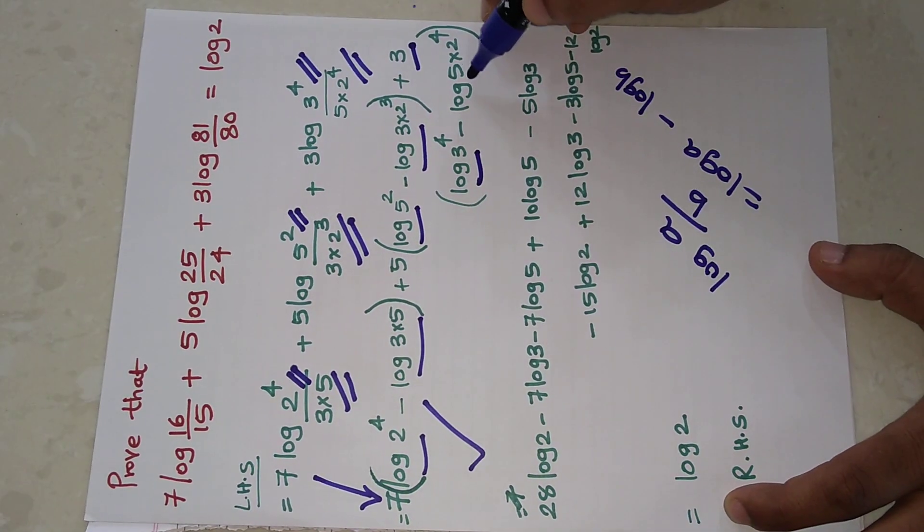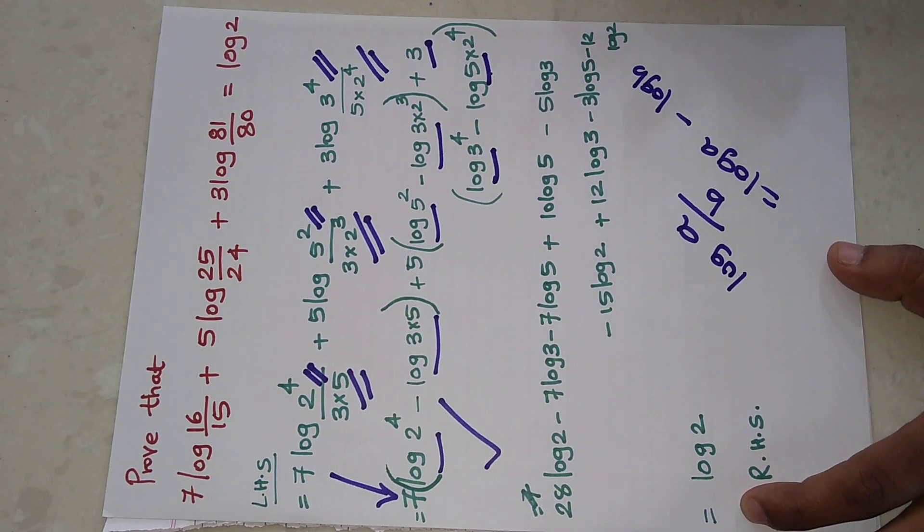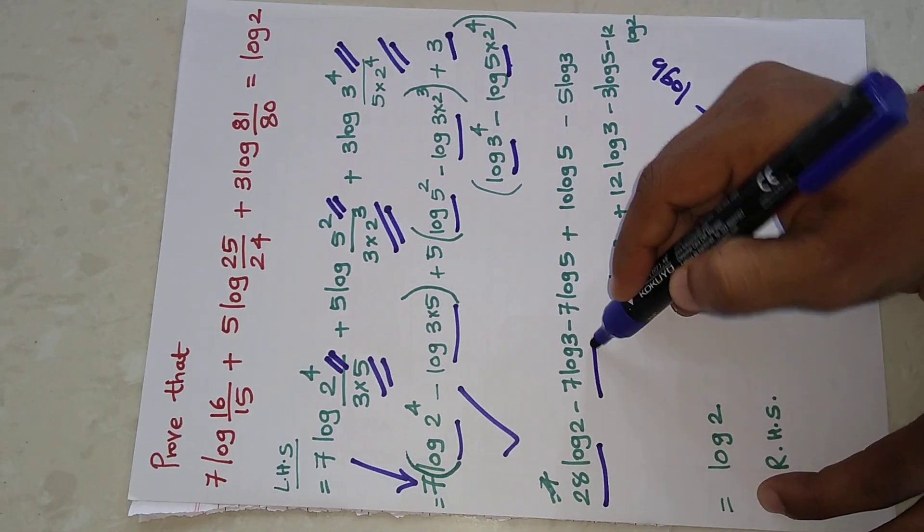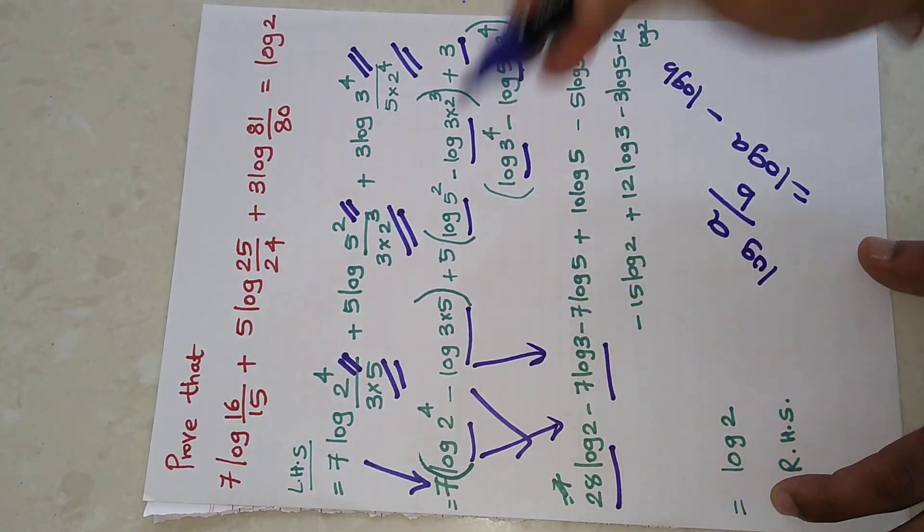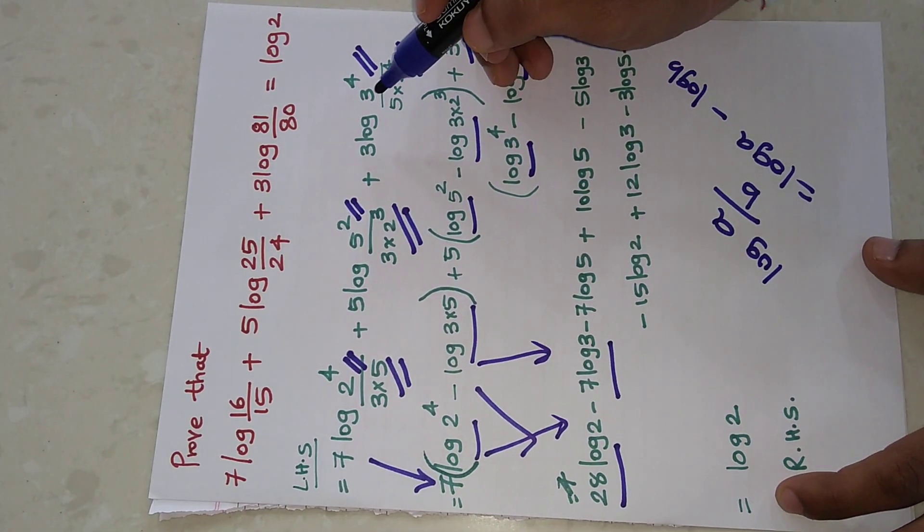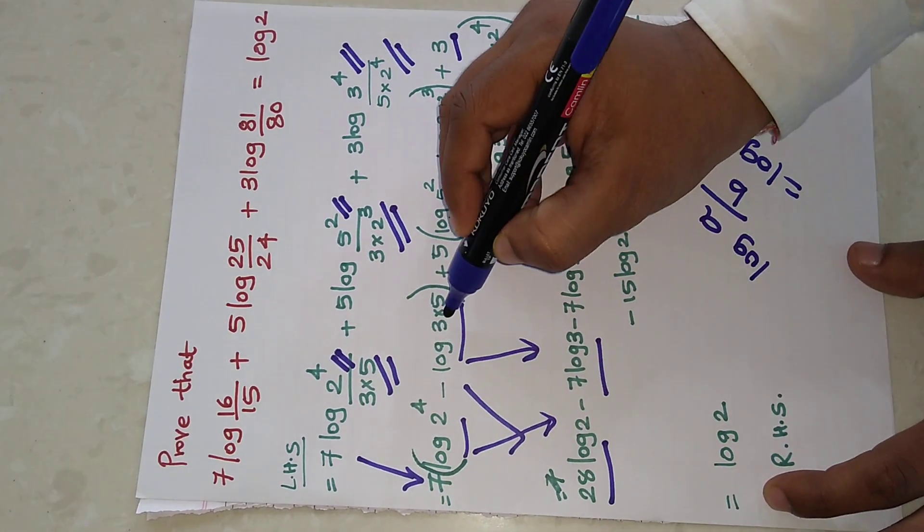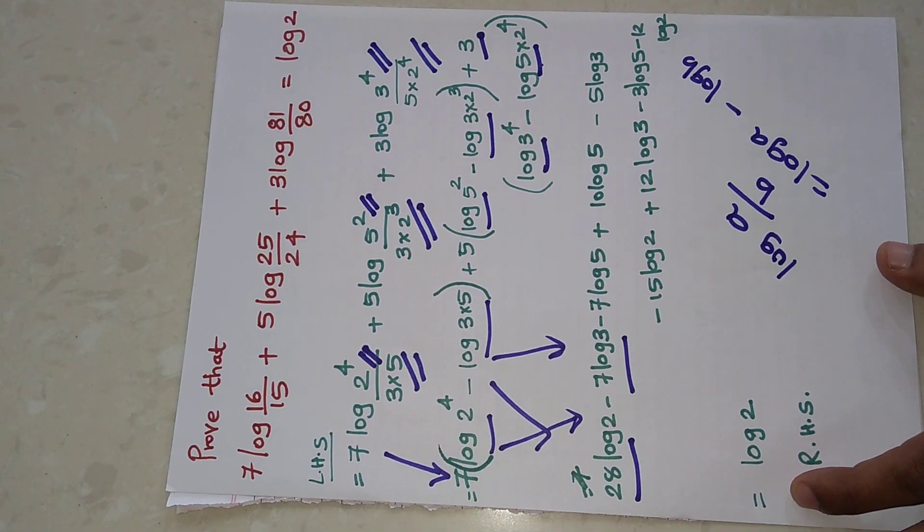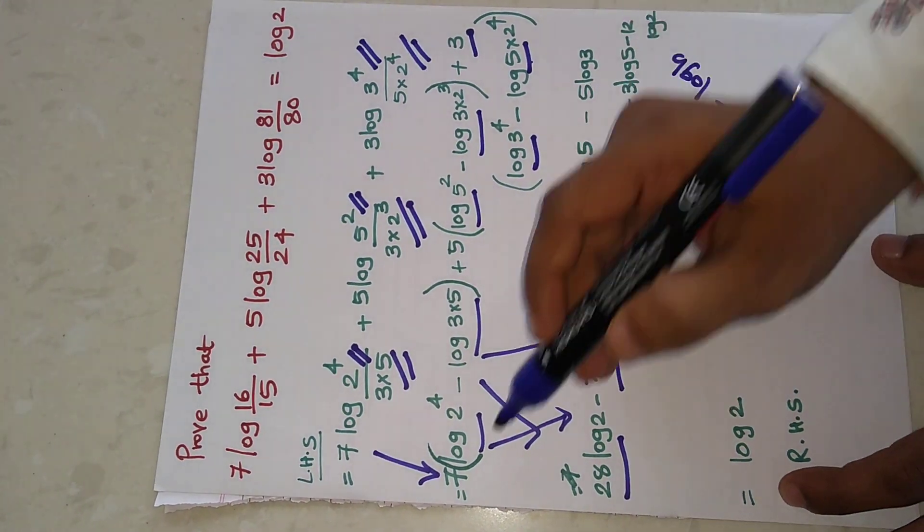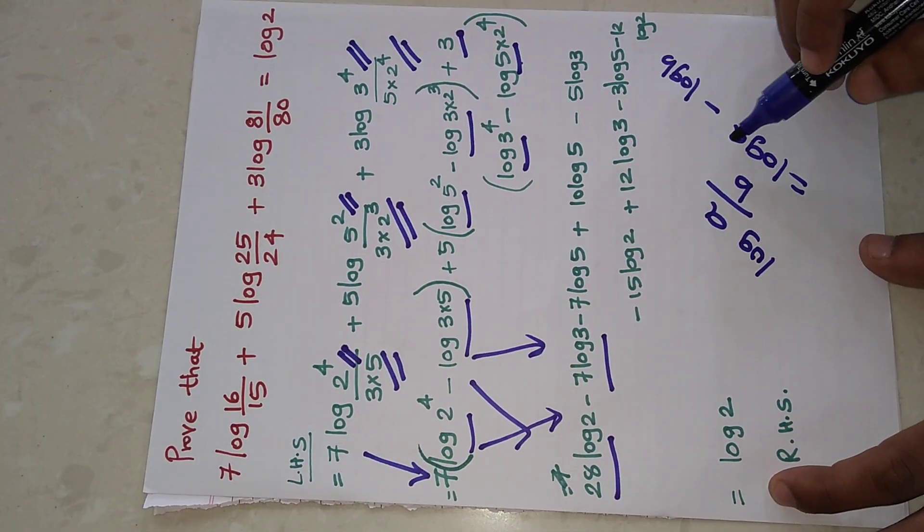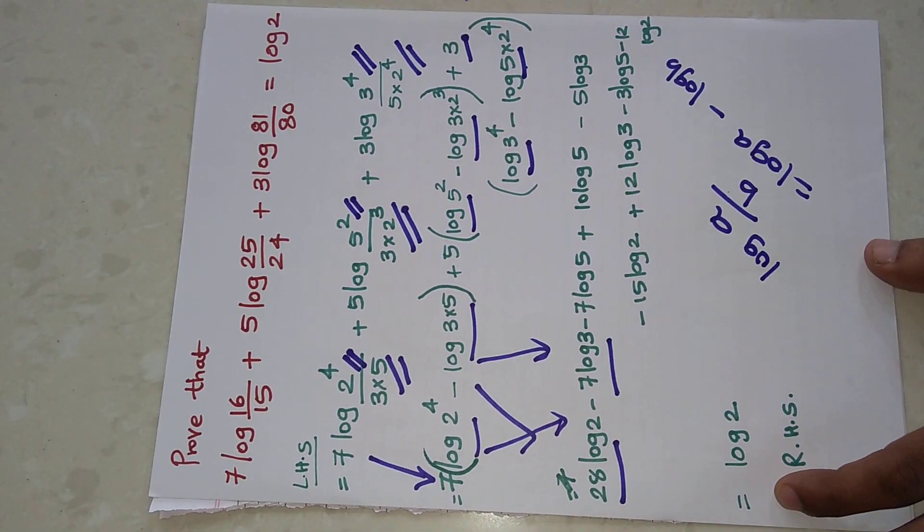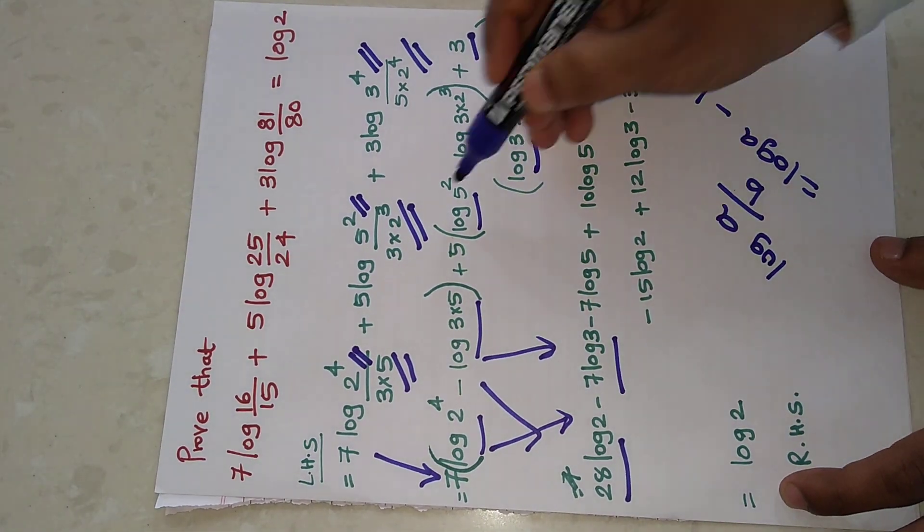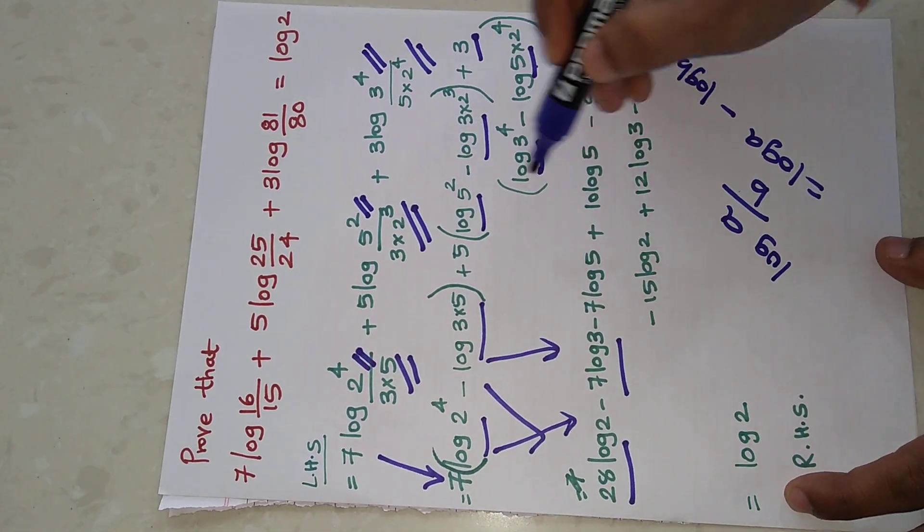Now when you open this bracket by multiplying 7, it will be first term, second term. Then as we have log(3×5), in that case 7 log 3 minus 7 log 5, which we are writing. Then move to this side: 5×2 is 10, and then log 5, then minus 5 log 3, and then 5×3 is 15.